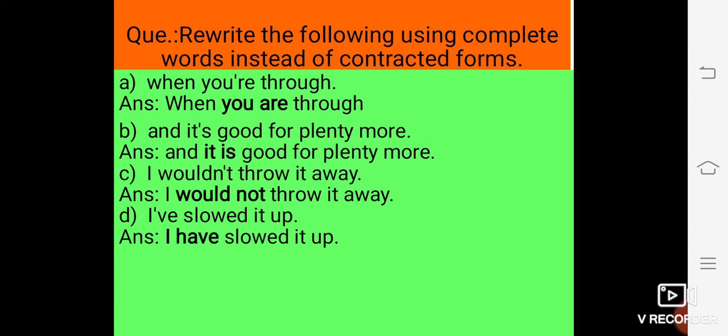D, I've slowed it up. The contracted form, that is, I've. And the answer is, I have slowed it up. So this is the complete word instead of contracted form.